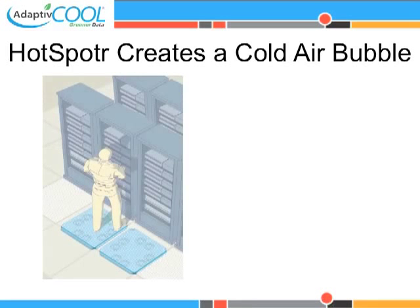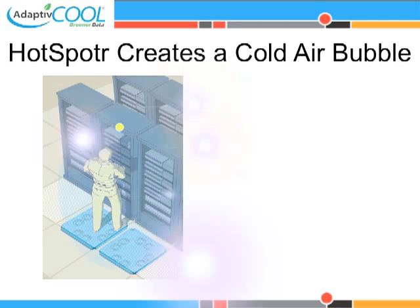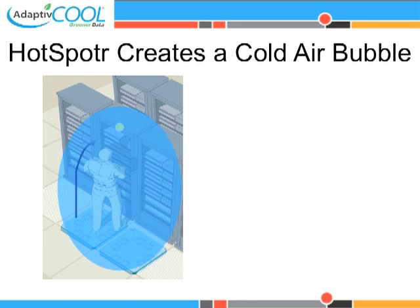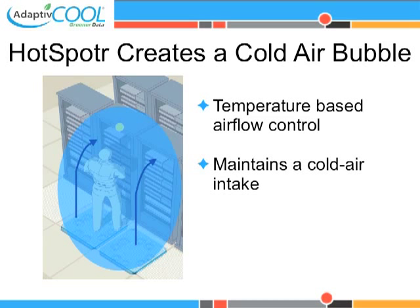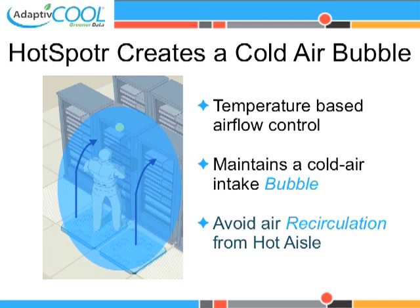The hotspotter comes with temperature sensors. Once the sensor is mounted on the server rack, the hotspotter creates a bubble of cold air in front of the server rack. This cold air bubble is maintained even under the most extreme conditions, such as daily changes in server heat load and even a rack failure. Supplying adequate cold air to the server also avoids recirculation of hot air from the hot aisle.